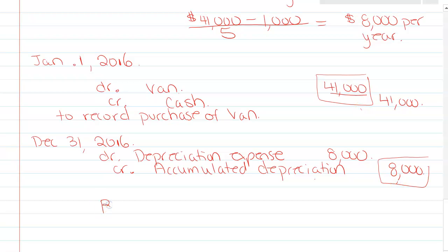Then on my balance sheet, it will say my van is $33,000. And then every year we do that, and when we get into year five, on your balance sheet it will say your van is worth $1,000. And that's how we depreciate over five years.